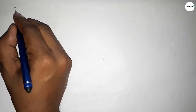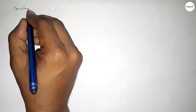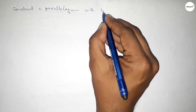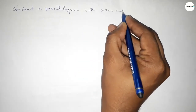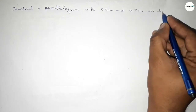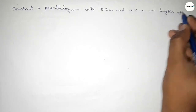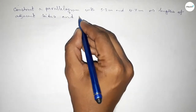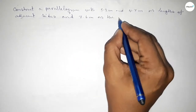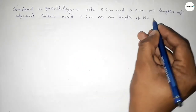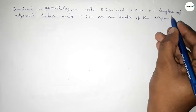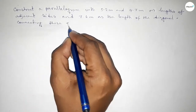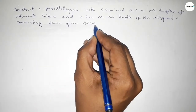Hi everyone, welcome to SI Share Classes. Today in this video we have to construct a parallelogram with 5.2 centimeter and 4.7 centimeter as the lengths of two adjacent sides, and 7.6 centimeter as the length of the diagonal of the parallelogram connecting the given two sides. So let's start the video.